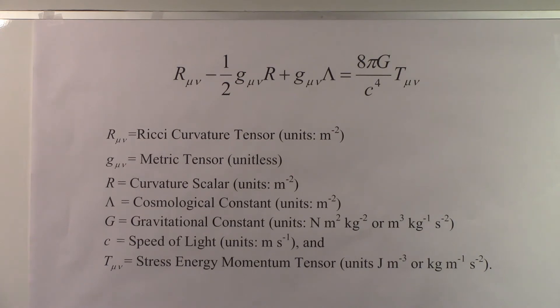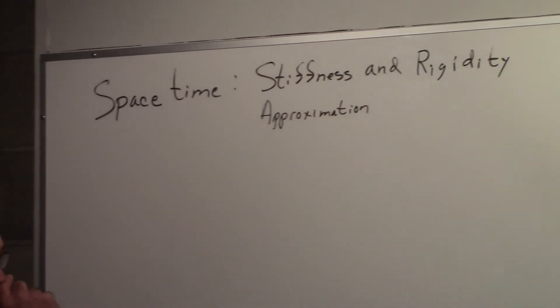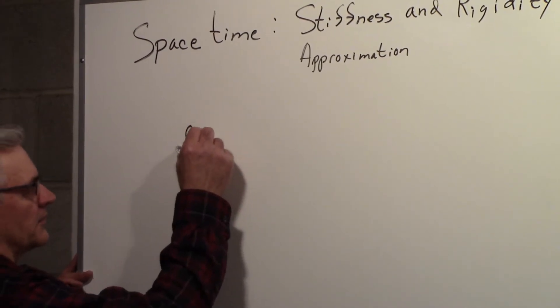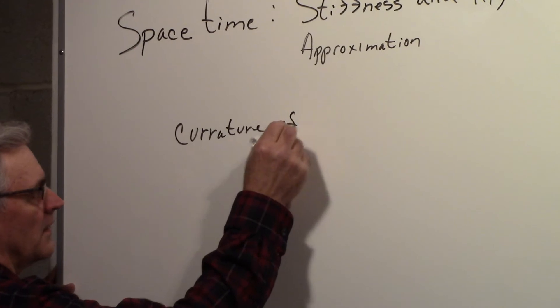So what we want to do is write that in a greatly simplified form. And the way we would do that would be, we come back over here, and we would say the curvature of space-time,